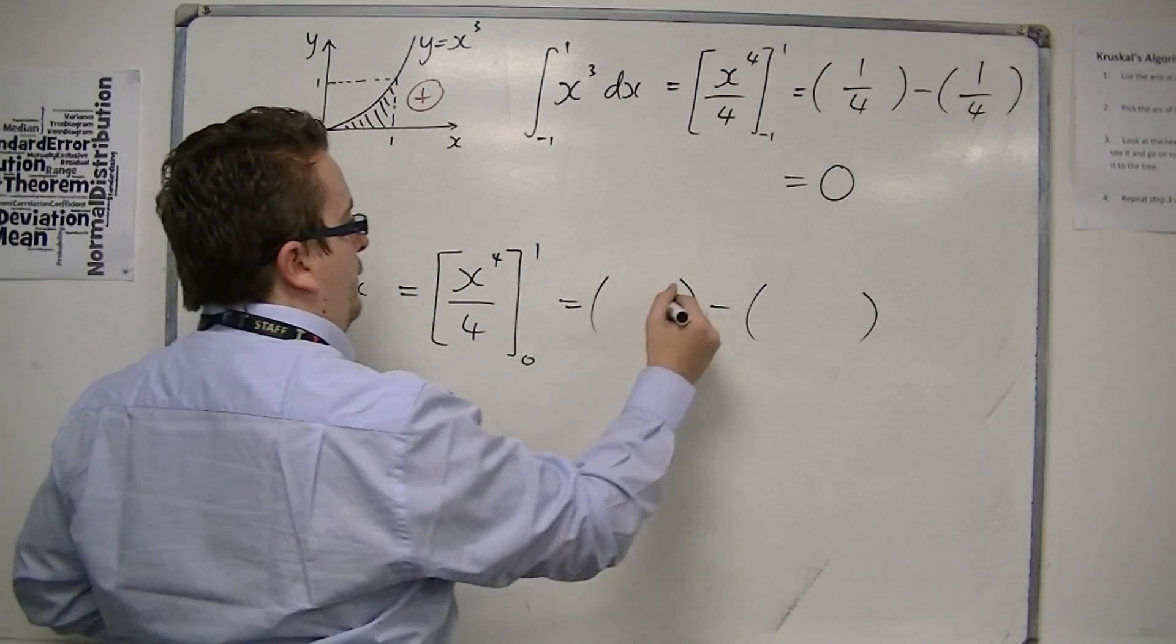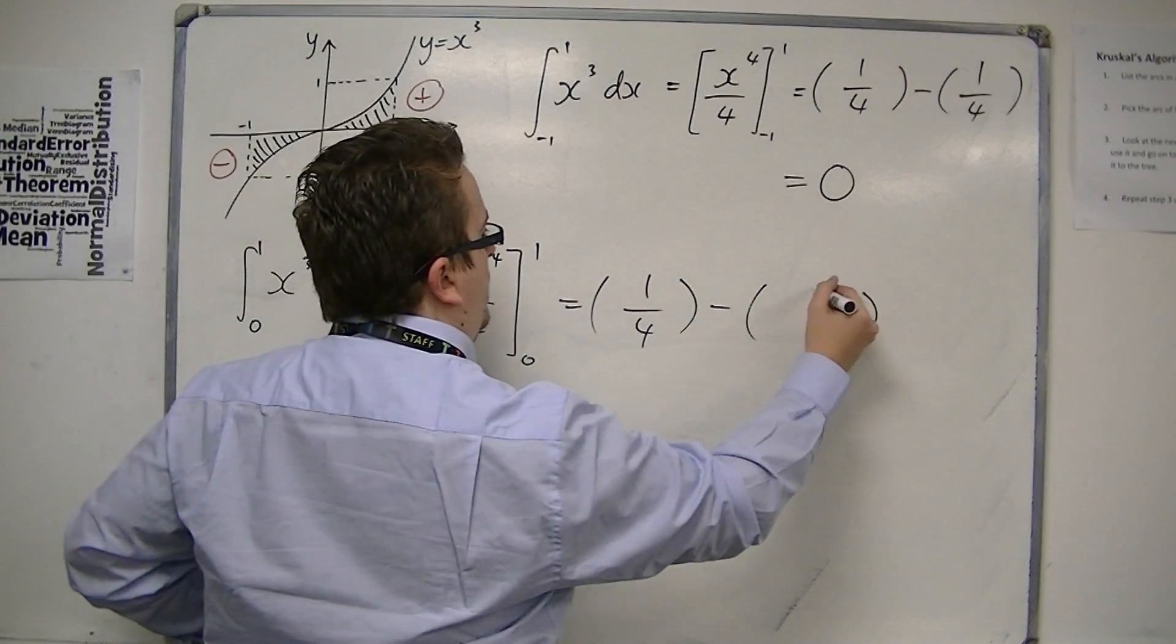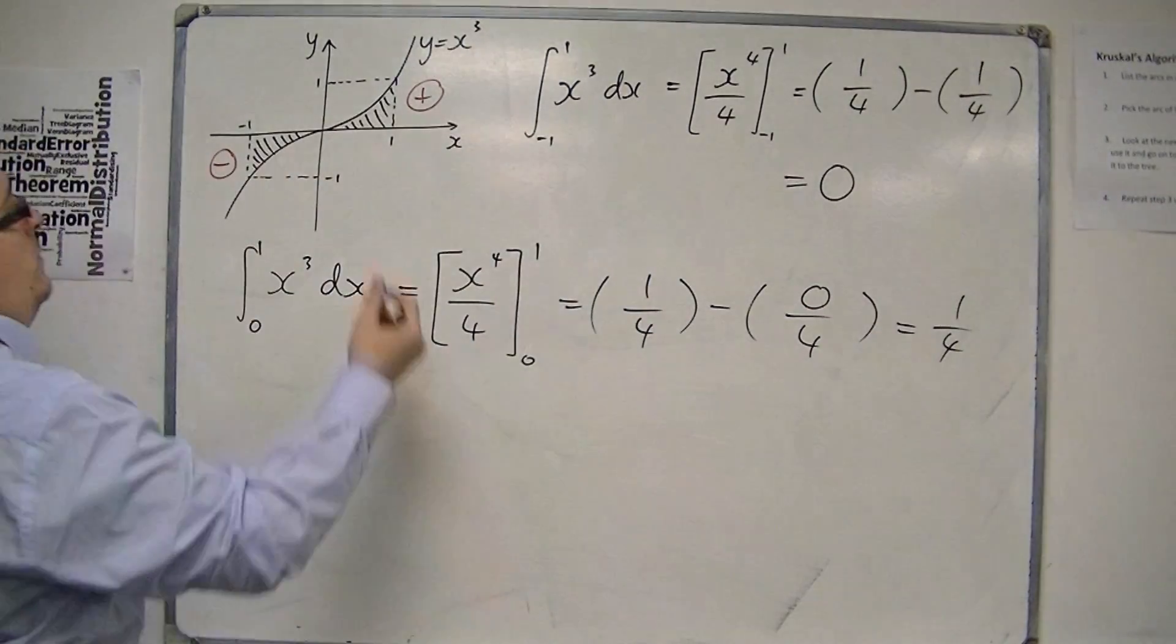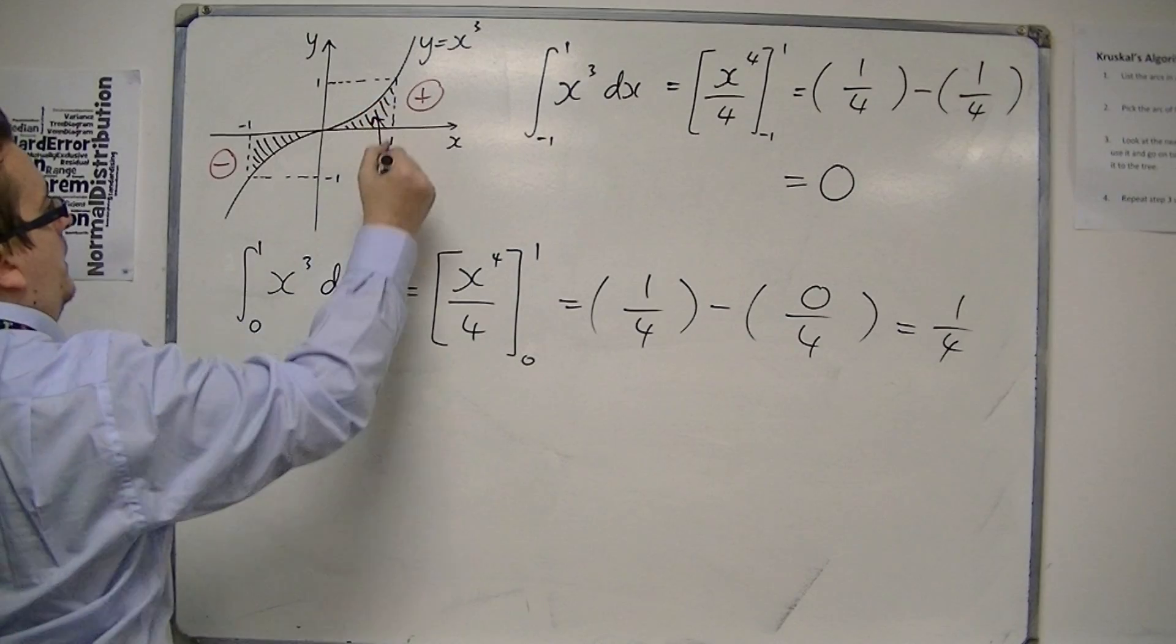So we get 1 over 4, take away 0 over 4, which is 1 quarter. So this area is 1 quarter.